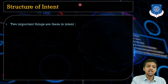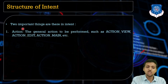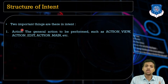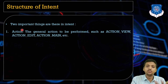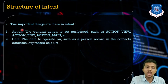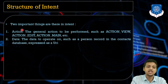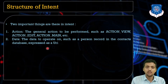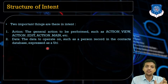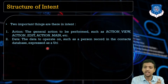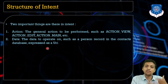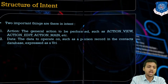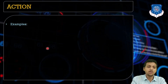The structure of intent has two important parts. Number one is the action — what you want to do: edit, view data, call, dial, and so on. The second is the data — whatever data you want to send from one component to another while performing the action. These two parts are necessary.